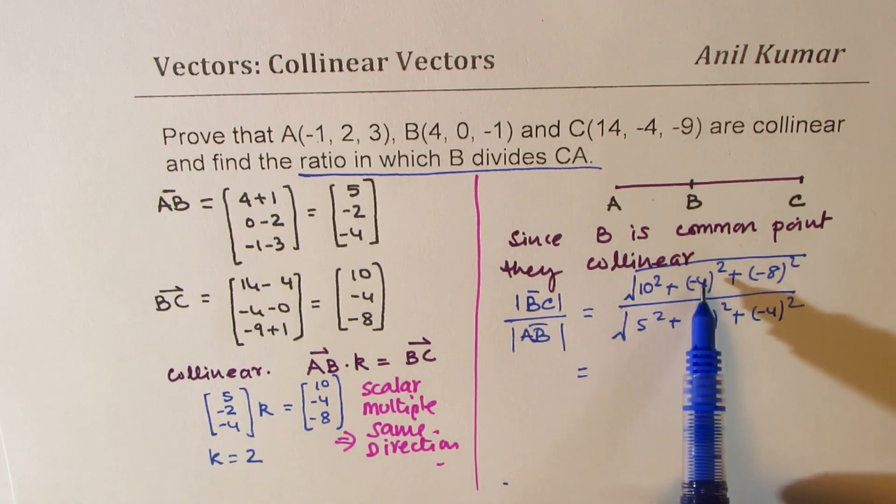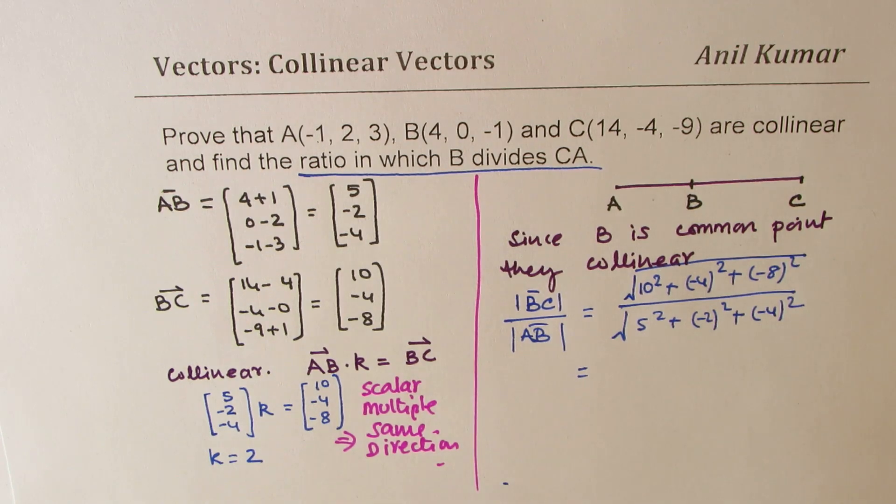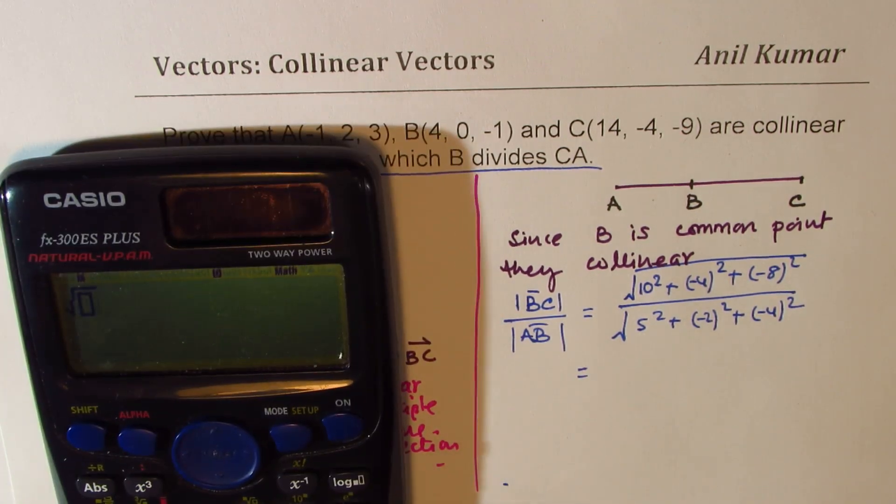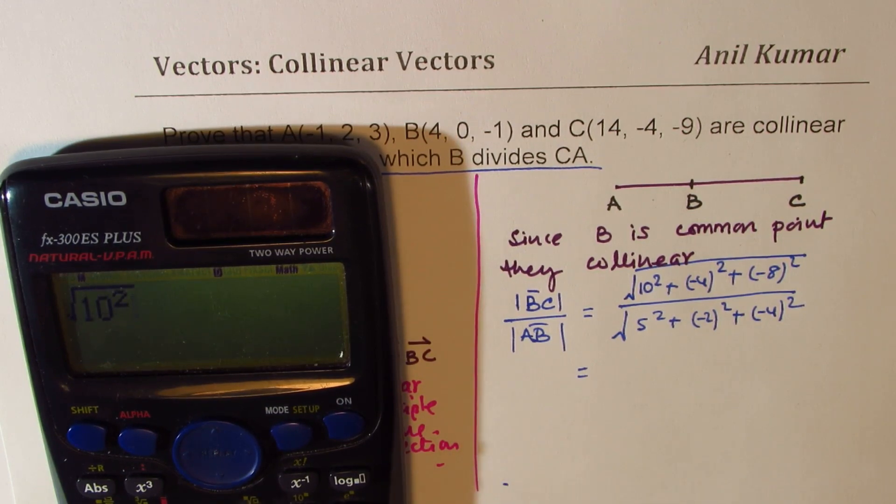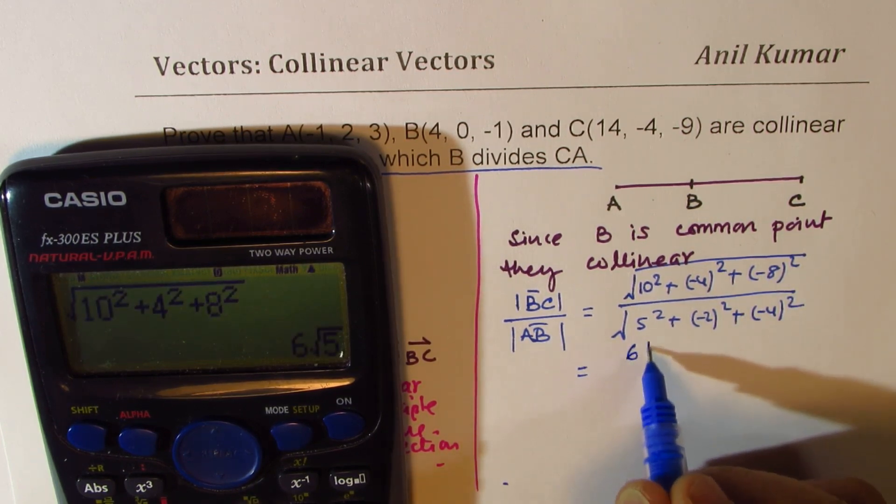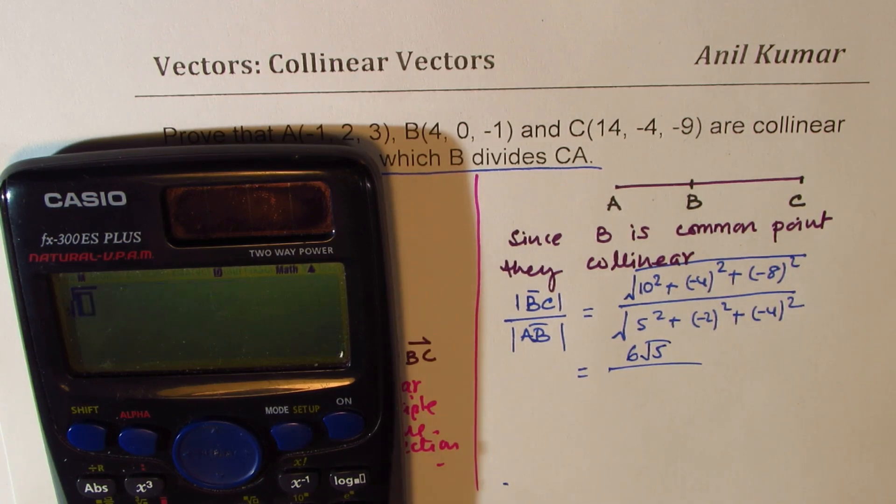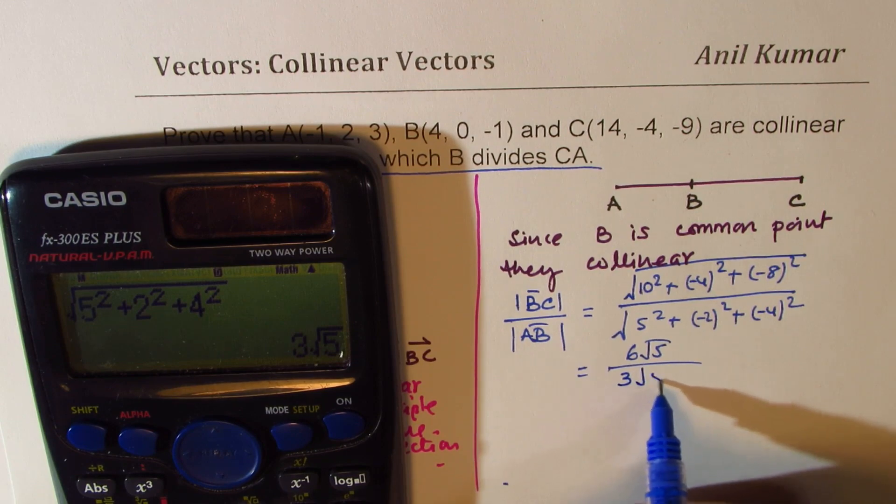Well, since you know this is 2 times that constant value, you know the ratio is 2 to 1. But anyway, let's calculate. So we have square root of 10 square plus 4 square plus 8 square. We get 6 square root of 5. And the denominator is square root of 5 square plus 2 square plus 4 square equals to 3 square root 5.